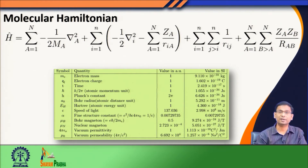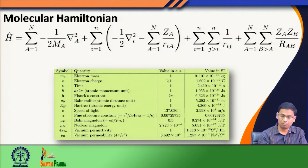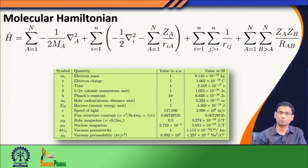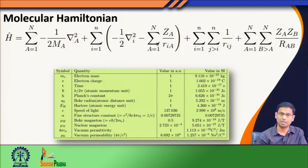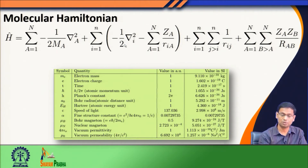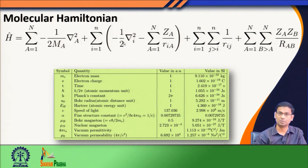Similarly, the charge of the electron is considered as one unit of charge in atomic unit. Therefore, wherever we had an e-squared term — when writing down the Hamiltonian in atomic unit — those e-squared terms are not present here because they are all equal to 1. Similarly, the mass of the electron, which should have been in the kinetic energy operator of the electron, has been made 1.